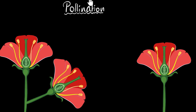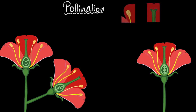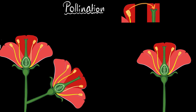Pollination is simply the act of transferring the pollen grains from the anther — the top part of the male organs — to the stigma. The stigma is the top part of the female organ. Here is the pollen grain sitting on the anther, and here is the stigma. The act of transferring pollen grains from the anther all the way to the stigma is basically what we call pollination.